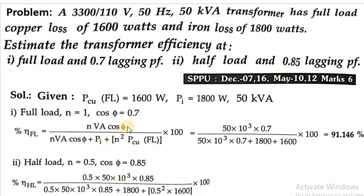The formula is: n × VA × cos φ. What is n? 0.5. What is VA rating? 50 × 10³. cos φ is 0.85 now. Divided by n, that is 0.5, into VA 50 × 10³, into cos φ 0.85, plus P_i, that is iron loss 1800 watts.